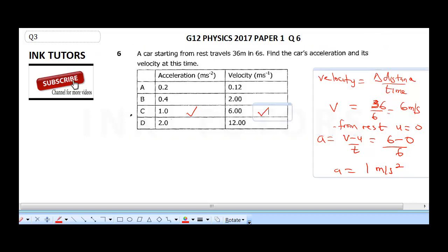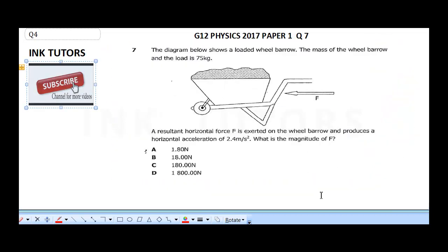The next question says: the diagram below shows a loaded wheelbarrow. The mass of the wheelbarrow and the load is 75 kg. A resultant horizontal force F is exerted on the wheelbarrow and produces a horizontal acceleration of 2.4 meters per second squared. What is the force? Just apply your formula for calculating force, which is mass times acceleration.